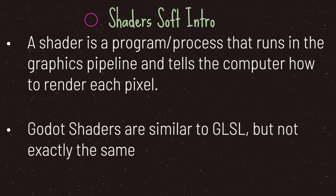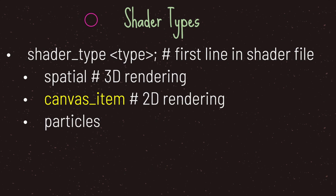A shader is a program or process that runs in the graphics pipeline and tells the computer how to render each pixel. In Godot we have three different shader types: spatial, canvas item, and particles. In this episode we will only be taking a look at canvas item.